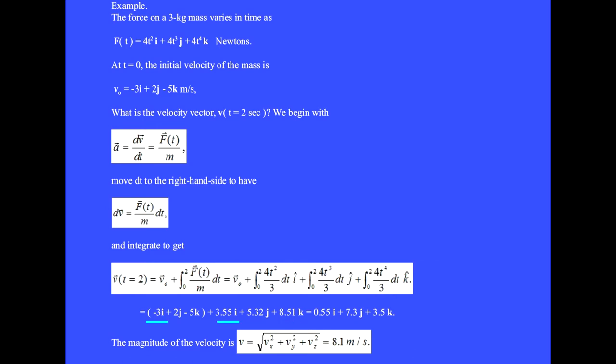Adding the i-hat components, 3.55 minus 3 makes 0.55i-hat. We get plus 7.3j-hat plus 3.5k-hat. The magnitude of this vector velocity is the square root of Vx squared plus Vy squared plus Vz squared equals 8.1 meters per second.